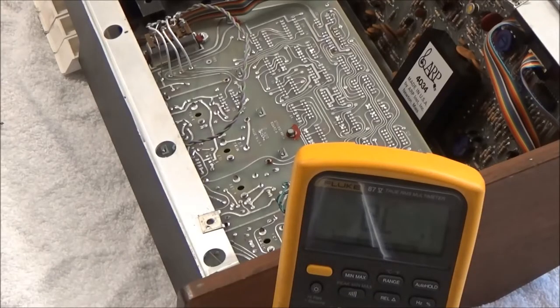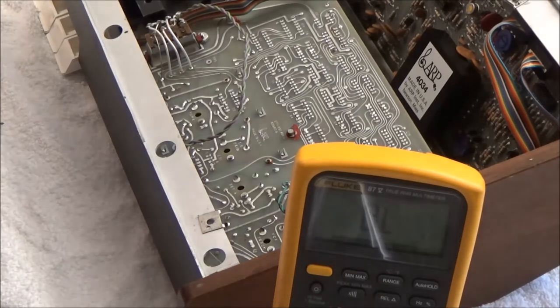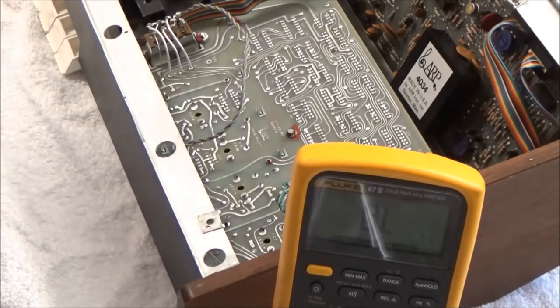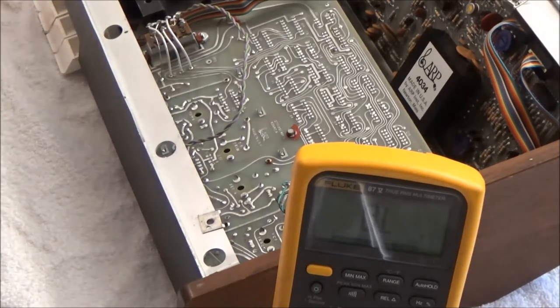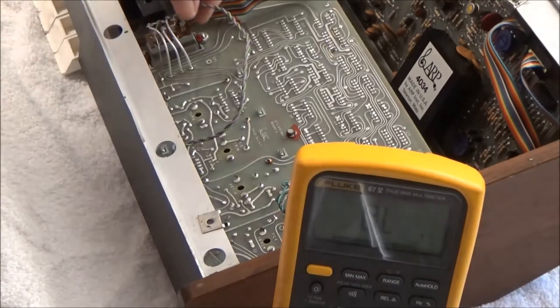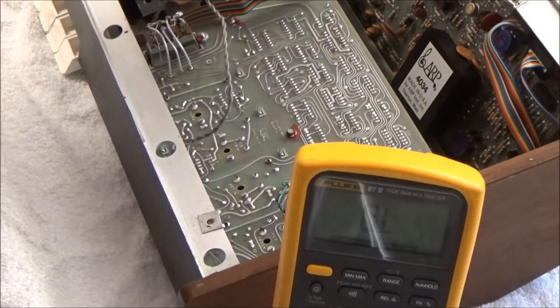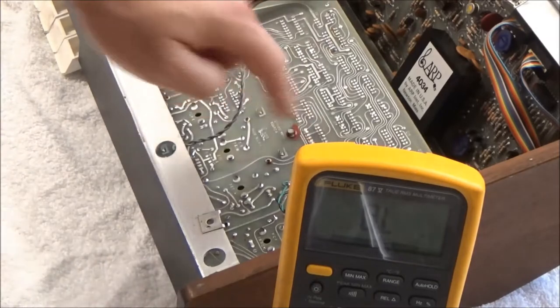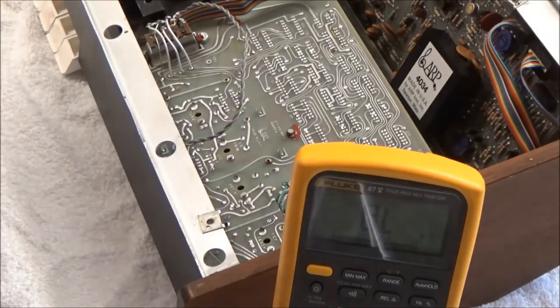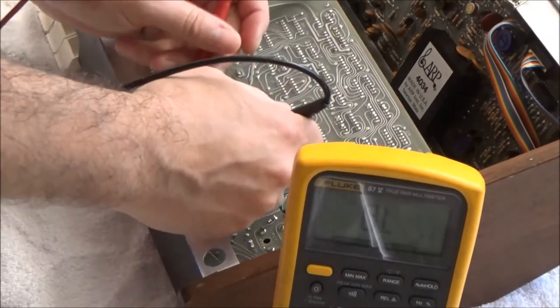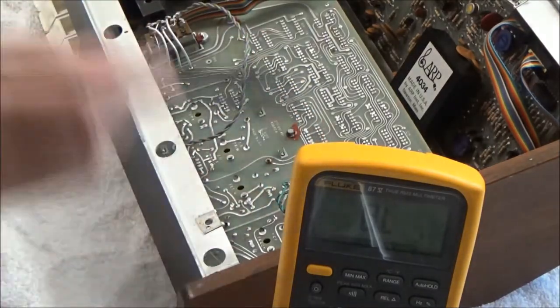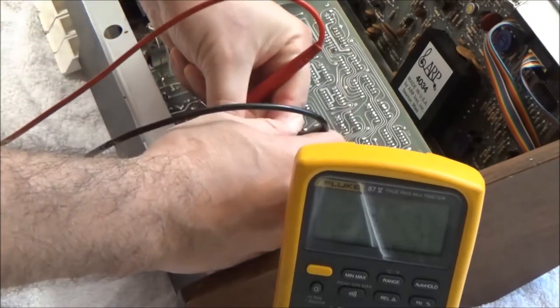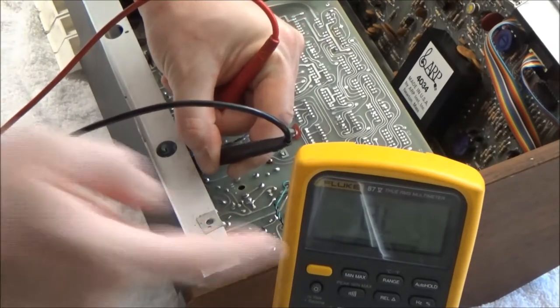The first thing I'm going to check is the touch sensor effects. A very common failure on the Pro Soloist is the actual touch sensor strip itself. So we can do a quick test of that. I've got the keyboard open and turned upside down. There's a pair of wires that come from the keyboard. The touch sensor strip is tucked under there. These wires come over to this board with the sliders. There's two terminals marked S and T, or T and S touch sensor. With the multimeter set to ohms, I'm going to put it down on those two terminals.